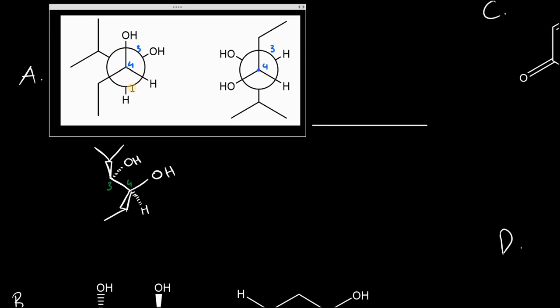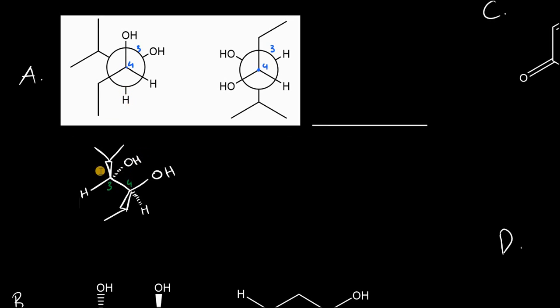The OH group at carbon 3, which is paired with the hydrogen, will project into the plane on the dash. The hydrogen attached to carbon 3 appears to be going downwards, so we draw that in. Now we just need to analyze the stereochemistry. At carbon 4, the hydrogen is projecting into the plane, which is good — it's the lowest priority group. We assign prioritizations and draw an arrow from 1 to 2 to 3rd highest priority.